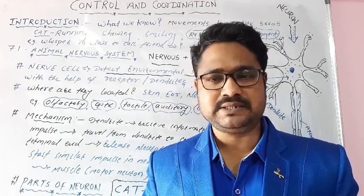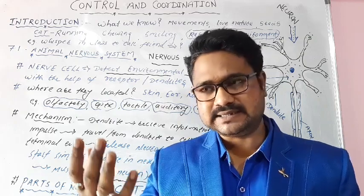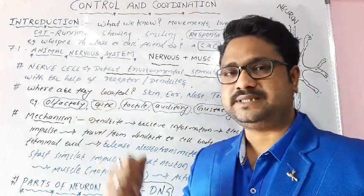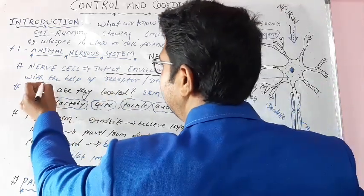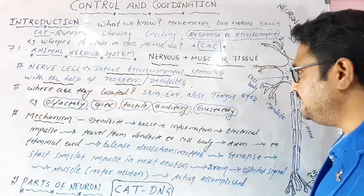This response of the body to such stimulus of the environment is taken inside and received by the nervous system cells in the body. With the help of what do they receive? With the help of receptors or dendrites.